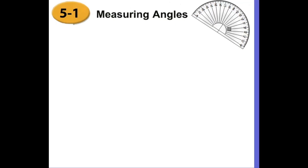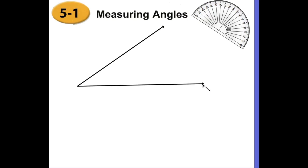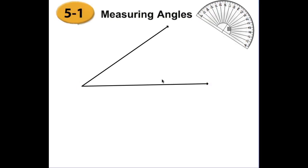Let me draw two rays. I'll put the first one a little longer. To form an angle I need a second ray with a common endpoint. The arrowhead continues to infinity, so this is the endpoint. When we have two rays sharing an endpoint, we get a shape called an angle.